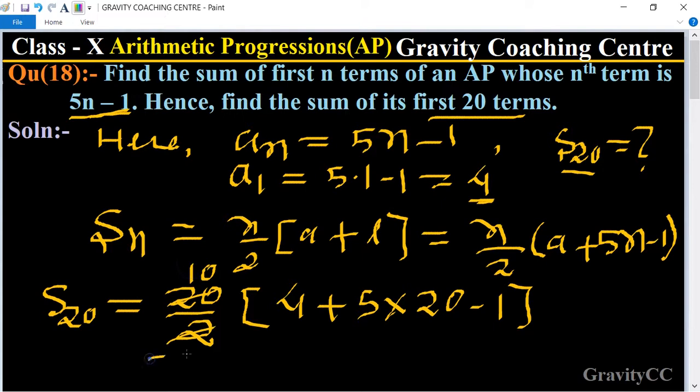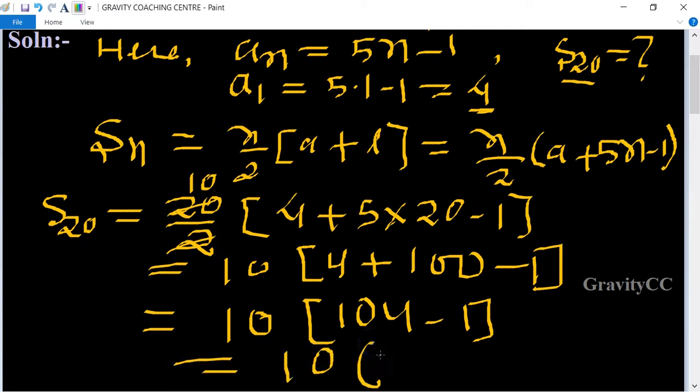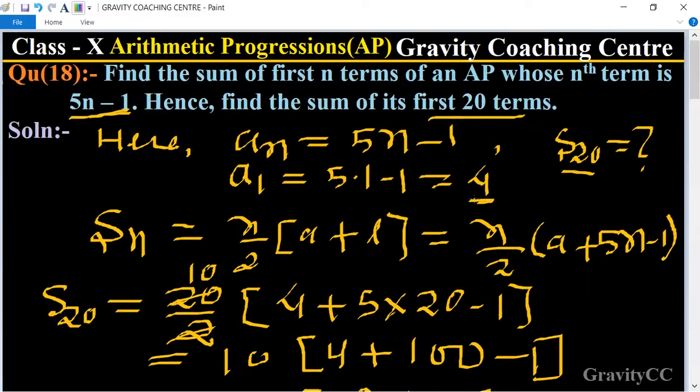Equal to 10 times (104 minus 1) equals 10 into 103 equal to 1030, which is the required answer: 1030.